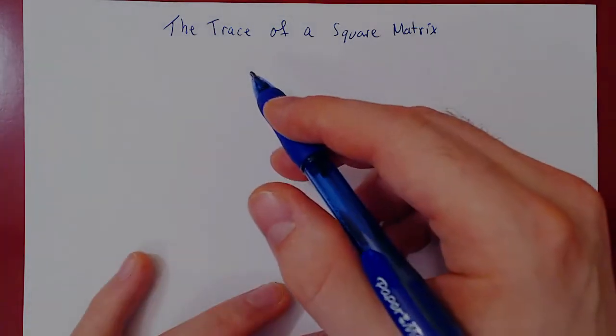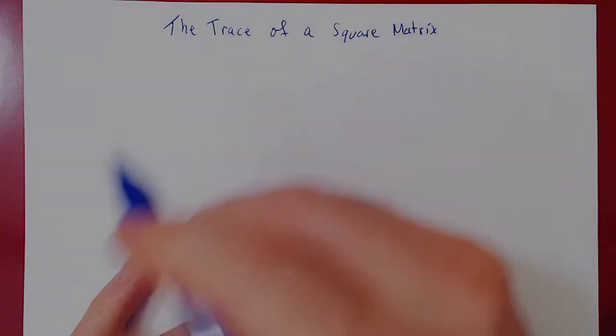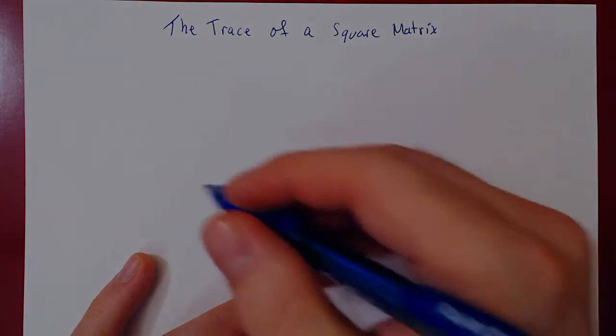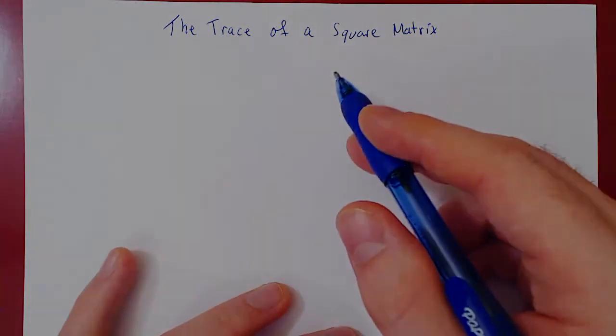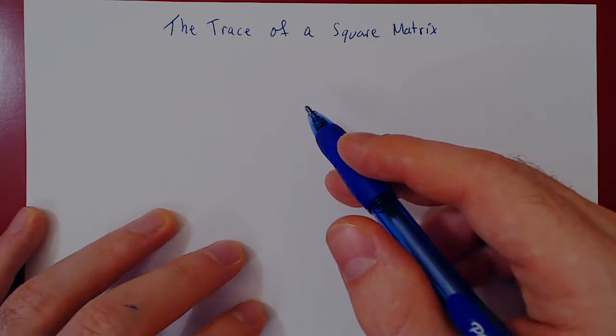Ok, so in this video we will introduce the trace of the square matrix. The trace happens to be a function from square matrices to the real numbers. It actually is a very simple function, but it has some interesting properties that we can sometimes take advantage of.